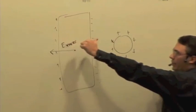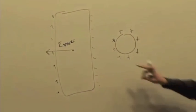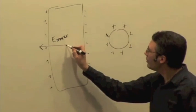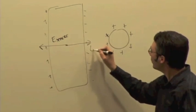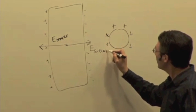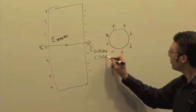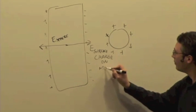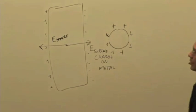These positive charges make a field pointing away from them. These negative charges make a field pointing towards them, so they both add up to an electric field due to surface charge on metal. That points in the opposite direction.